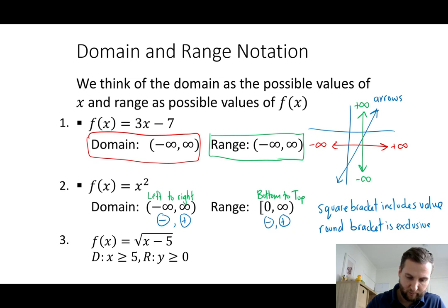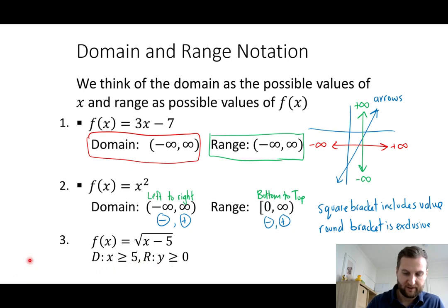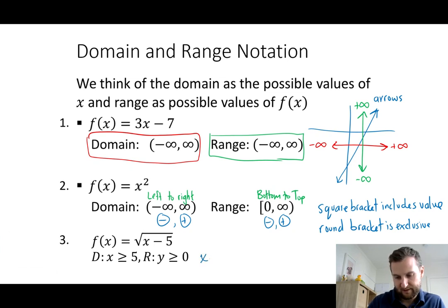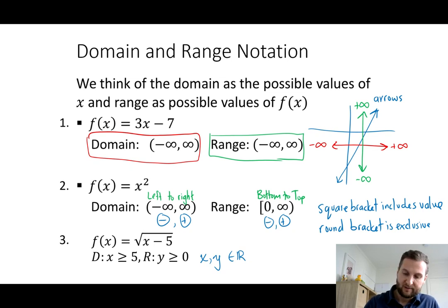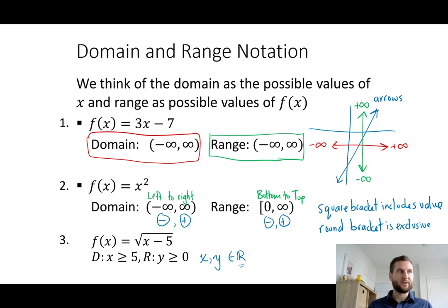Using inequality notation: domain is x ≥ 5 and range is y ≥ 0. We also say x and y are real numbers — this distinguishes from integers (1, 2, 3, 4...) which don't include decimal numbers, so the real number distinction matters here.